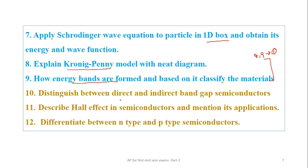And when we come to the next one, it says semiconductors and semiconducting devices, so for the first mid, we have only up to semiconductors. So in that, we have mainly three questions, distinguish between direct, indirect bandgap semiconductors, and then Hall effect, and difference between n-type and p-type semiconductors.